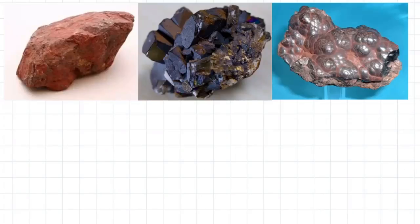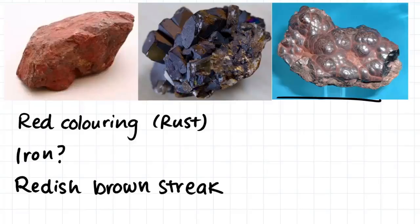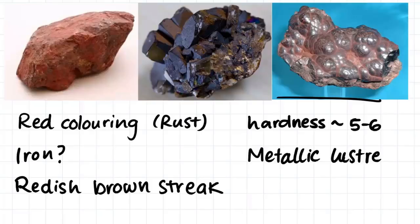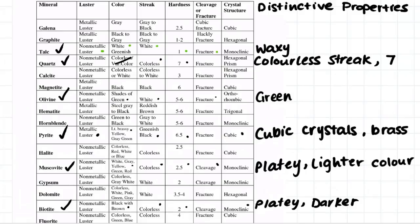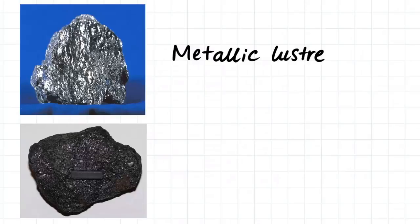This mineral here is quite tricky to figure out. We know all these samples are of the same mineral. We can see that all the samples have a sort of red coloring on them, and we think that this is because it's been weathered — this is evidence of rusting of an iron mineral within the rock. We do a streak test and the mineral has a reddish-brown streak. It has a hardness of around 5 or 6, and it has a metallic luster on the surfaces where it hasn't been weathered. This mineral is haematite. The main giveaway was the reddish-brown streak and the red rusty color on its surface.